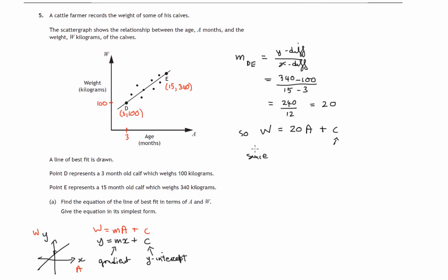So since (3, 100) lies on the line, we know that a being 3, w will be 100.